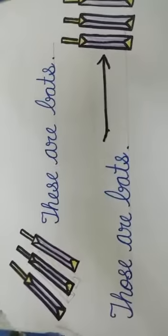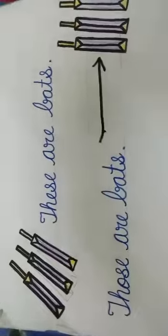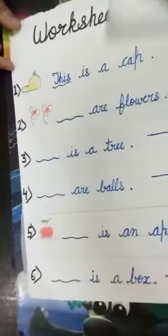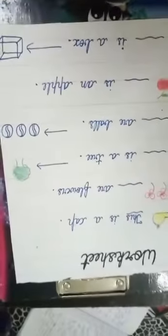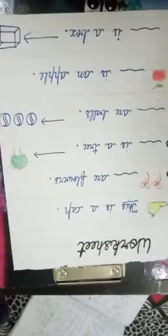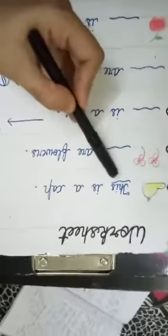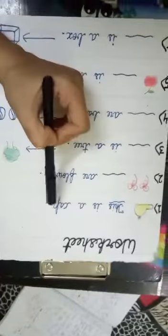So children, that was the use of this, that, these, those. Now it's time to test yourself. Let's begin with this worksheet. For a single cap which is close to you, we will use 'this': This is a cap.